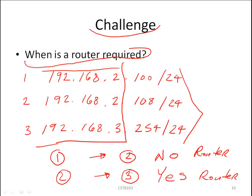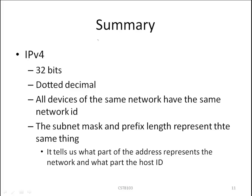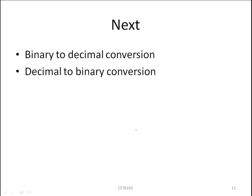In this mini-lecture, we learned that an IP address is 32 bits in length, and since we humans cannot remember 32 bits, we use dotted decimal notation. We also learned that all devices on the same network have exactly the same network ID, and that the subnet mask and prefix length represent the same thing — they tell us what part of the address is used for the network and what part for the host. The next mini-lecture will deal with binary to decimal and decimal to binary conversion. Hope you enjoyed this mini-lecture — look forward to seeing you shortly.